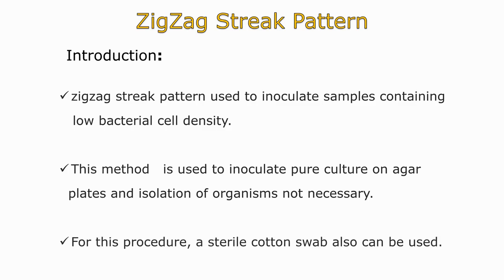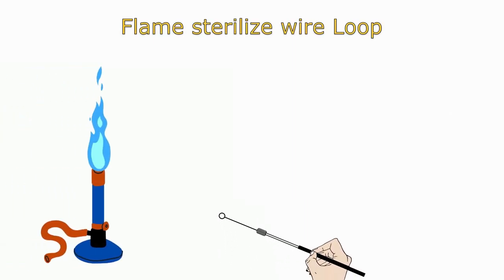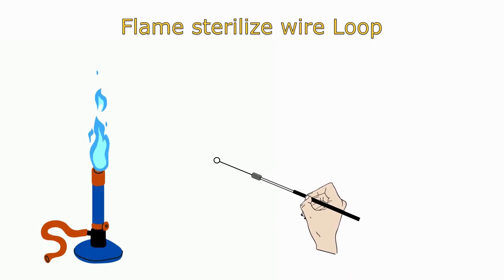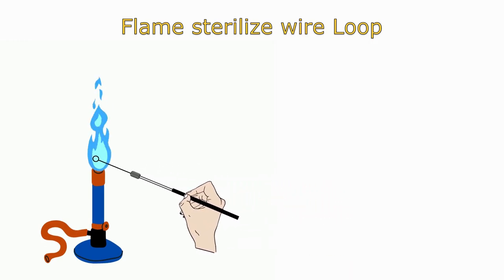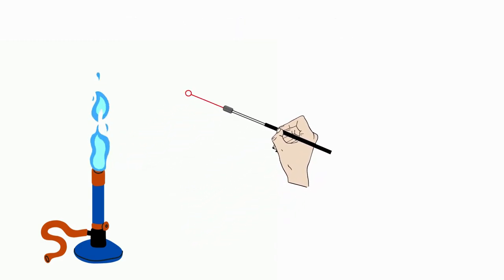For this procedure, a sterile cotton swab also can be used. The first step in this technique is flame sterilization of the wire loop. Hold the loop in the flame for a few seconds. When the wire loop is red hot, hold the loop away from the flame and allow it to cool for a few moments.